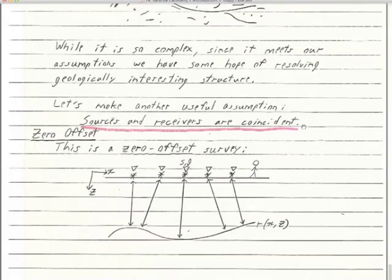Now we're going to make another useful assumption that this data set doesn't hold to, and that's the zero offset assumption: sources and receivers are in the same place at the same time. We're going to conduct our survey like a chirp survey, moving across the landscape, and whenever a source goes off, the receiver is right there at it. So the S and G coordinates are the same — we just call it X, the surface location of the trace, exactly the same as the surface location of the source.